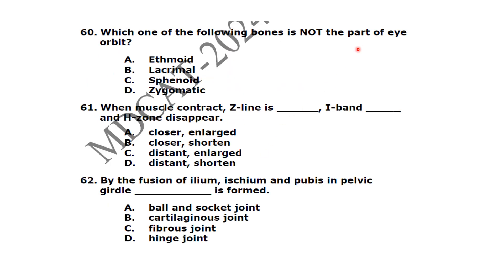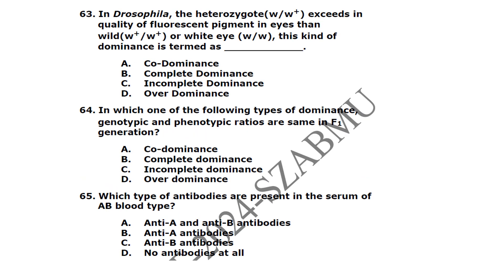Which one of the following bones is not part of the eye orbit? The zygomatic bone is not part of the eye orbit. When a muscle contracts, the Z-line comes closer, the I-band shortens and disappears. Option B is correct. By fusion of ischium and pubis in the pelvic girdle, the acetabulum is formed.